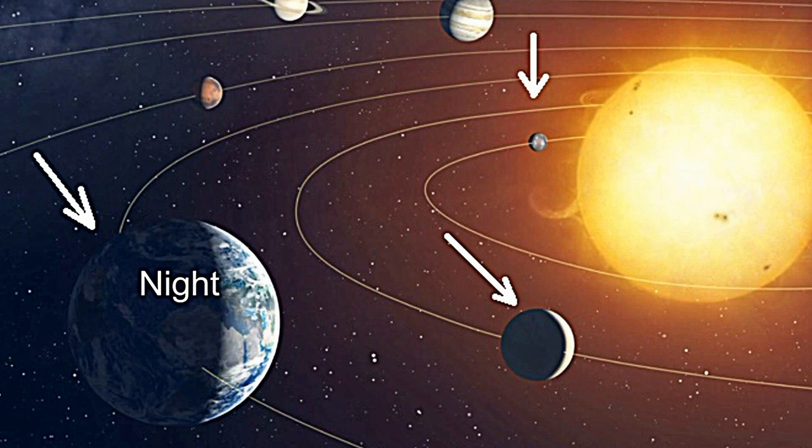That means it's like Mercury's a dime, Venus is a penny, and say Earth is a nickel. They're all flat on the table. They're on the same plane.